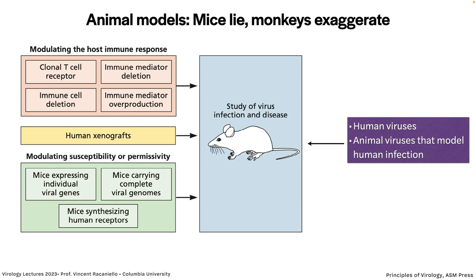You can modulate the immune response, put in clonal T cell receptors, immune deplete certain populations like B cells and T cells. You can put human tissues into mice — that's a way of making a mouse model for HIV AIDS. You can produce transgenic mice that have individual viral genes, whole viral genomes, or even human receptor genes to make them susceptible to infection. Some mice can be infected directly with human viruses, and in some cases animal viruses similar to human viruses provide models. Other animals used include ferrets, hamsters, guinea pigs, and non-human primates, though mice are preferred because they can be inbred, bred in large numbers, and are easy to care for.